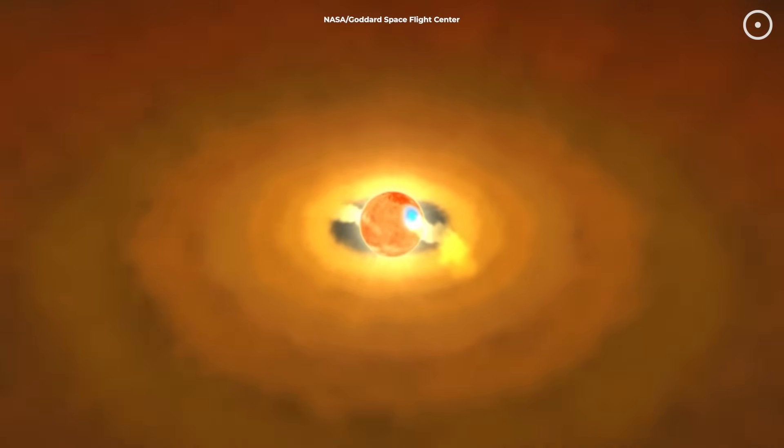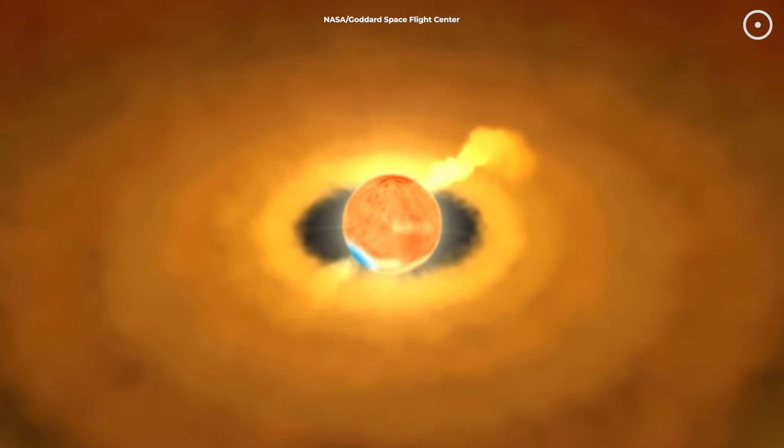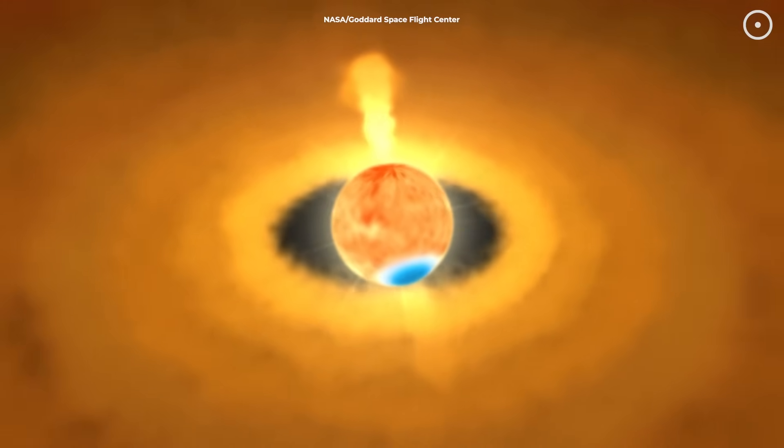What we're looking at is called a protostar. Basically a star in its infancy. And just like human babies, stellar babies can be pretty messy eaters.